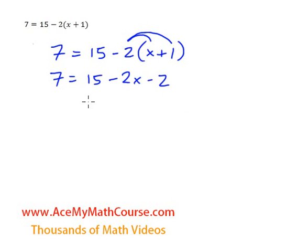Okay, so now we can combine like terms. That would be the next step. 15 minus 2 is 13. The 7 comes down, the minus 2x stays here.